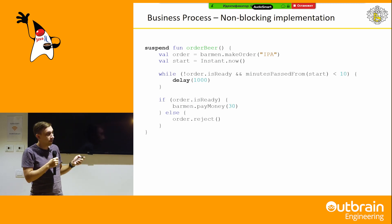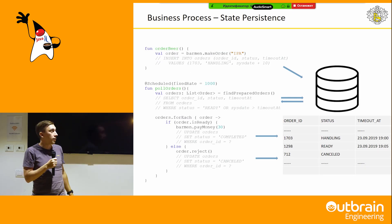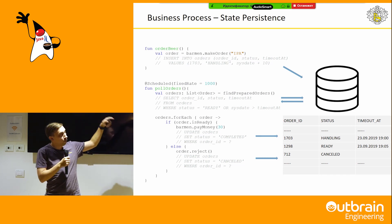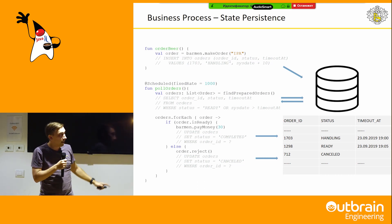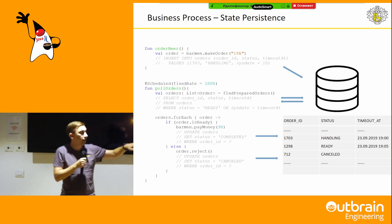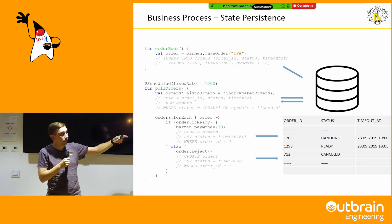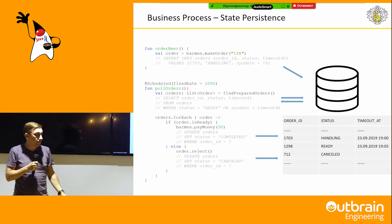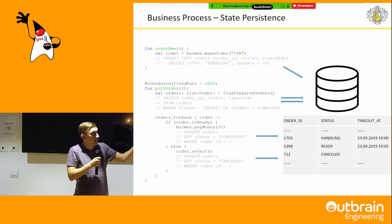We can make one more solution — a persistent solution. The first step is to put an order into some persistent storage, for example a database, and make a record with our order ID, status, and timeout date. The second component is a poller which polls our database and tries to handle orders that are ready or have reached their timeout time.